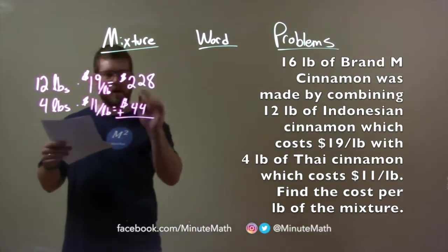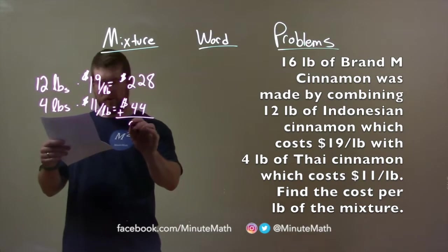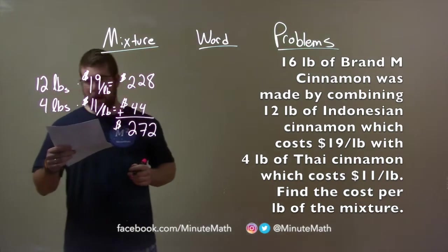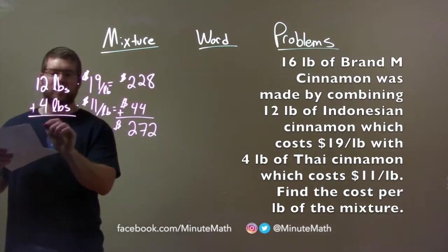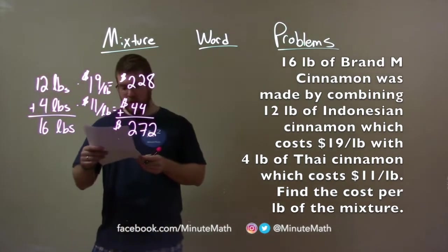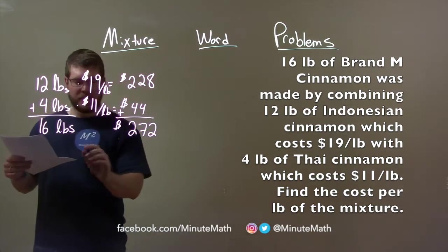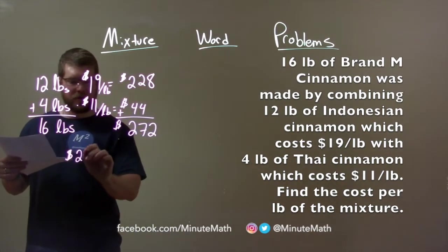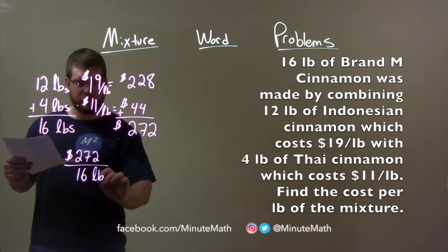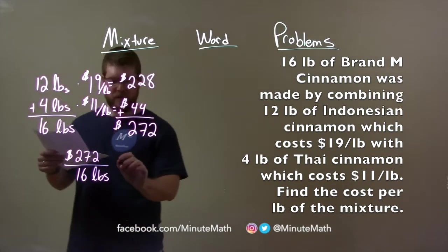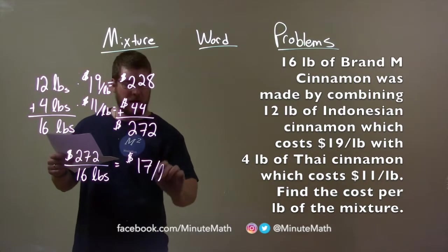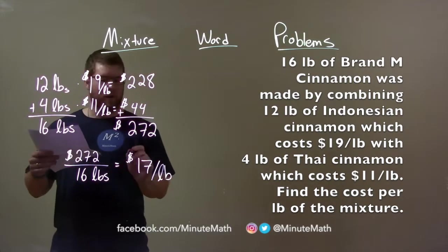We add that total cost up and we get $272. Now, 12 plus 4 is a total of 16 pounds, right? So if we want to find the total cost per pound of the mixture, we take our $272, divide that by our 16 pounds, and we get a final answer of $17 per pound for our mixture.